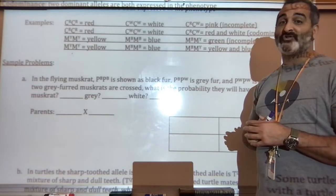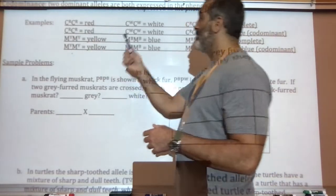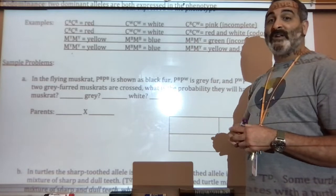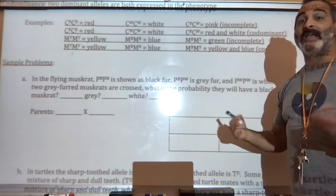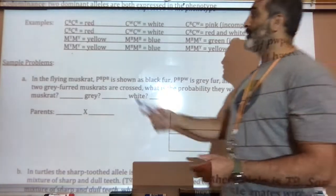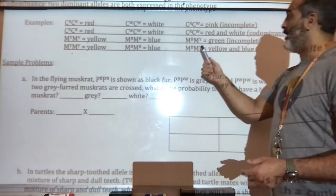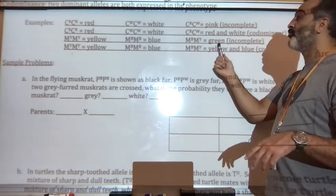Here's the other example. Let's show you what a codominant one is. Two capital R's is a red. Two capital W's is a white. An R and a W would give you a red and white furred animal in this case. This is called codominant. Same thing here. Two Y's is yellow. Two B's is blue. A B and a Y in any order, Y B, B Y, it doesn't matter. We'll give you green.